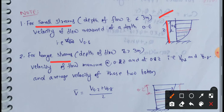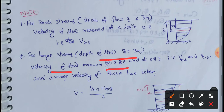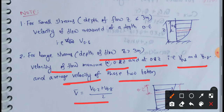For large streams where depth of flow is greater than 3 meters, velocity of flow is measured at two places: 0.2Z and 0.8Z. These give V₀.₂ and V₀.₈. The average velocity is V̄ equals (V₀.₂ plus V₀.₈) divided by 2.